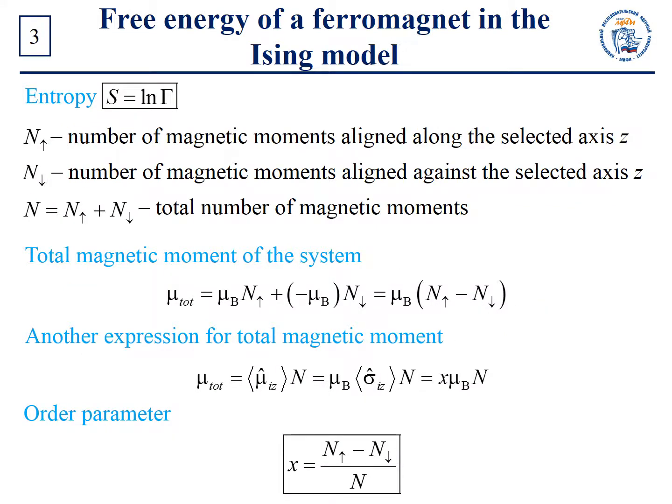Let us find the entropy. Gamma is the number of possible states of the system at a given temperature. Here and after we omit the Boltzmann constant. Denote N_up and N_down as the number of magnetic moments aligned along or against the selected axis Z respectively. Therefore, the total number of magnetic moments is equal to the sum of N_up and N_down. The difference of N_up and N_down defines the total magnetic moment of the system, or magnetization. The total magnetic moment of the system can be described as follows.